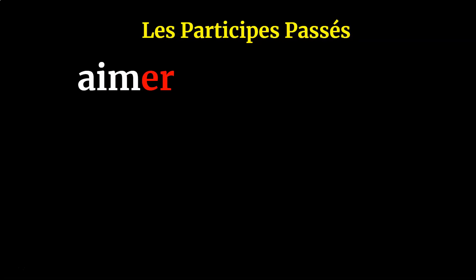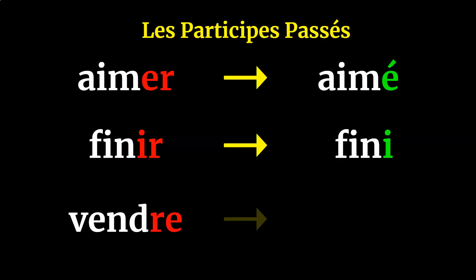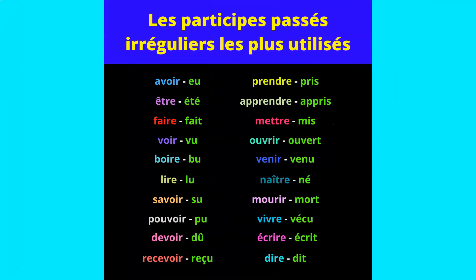The second part of the equation when conjugating le conditionnel passé is the past participle. The formula is quite simple: for -ER verbs, drop the -er and add an é (accent aigu); for -IR verbs, drop the -ir and add -i; and for -RE verbs, drop the -re and add -u. Of course there are exceptions, and on my Instagram page you can find a graphic showing the most common irregular past participles in French.